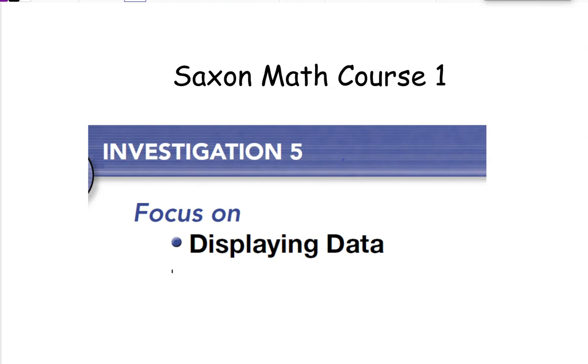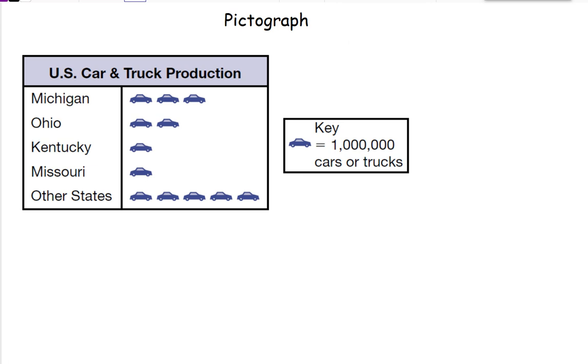Hello everyone, today's lesson is investigation 5, displaying data. We've already displayed data using circle graphs, line plots, and bar graphs. Today we're going to look at using a pictograph. A pictograph uses pictures instead of x's to mark and show us how much we have. In this case, US car and truck production. You can see that one car picture equals a million cars or trucks.